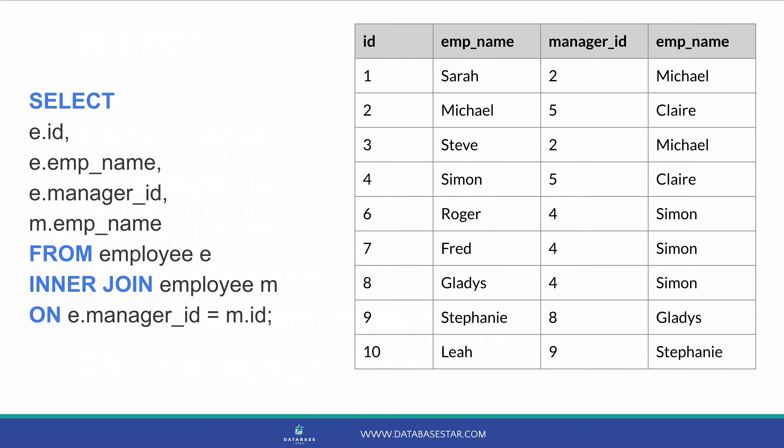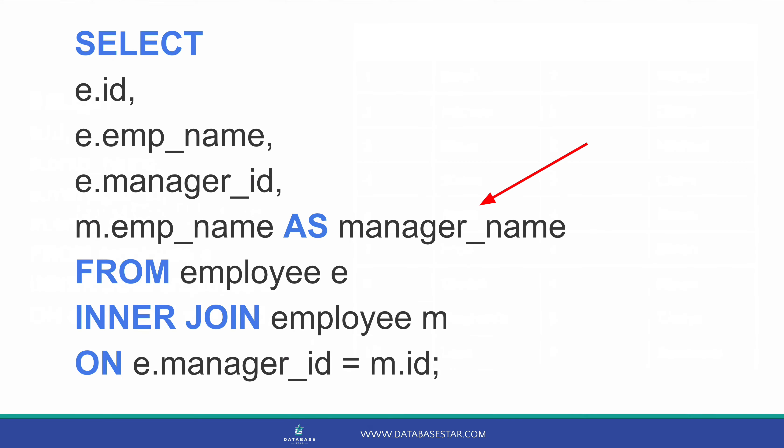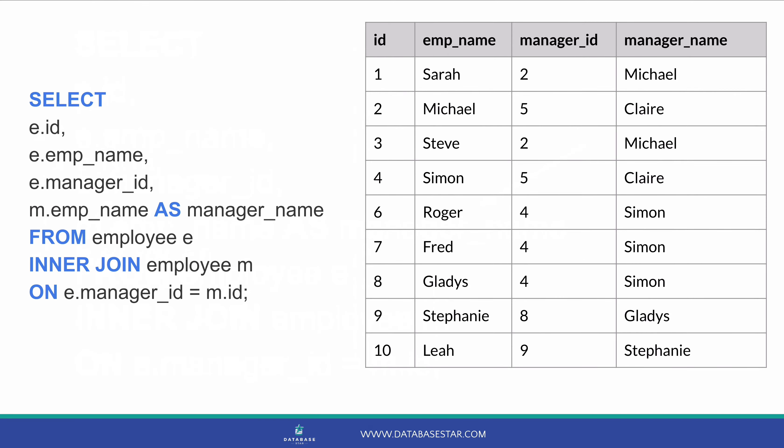We can change the name of the column in the output by using a column alias. Let's add a column alias of manager_name to the name field that comes from the manager record. We do this by specifying AS then the manager name. The AS keyword is optional, but it's better to add it to column aliases so it's clear that an alias is used. Here are the results — we can see that the output now has a manager_name column, which makes it a little easier to understand.